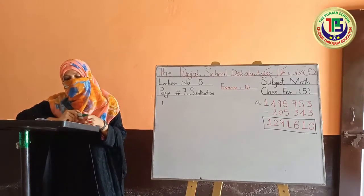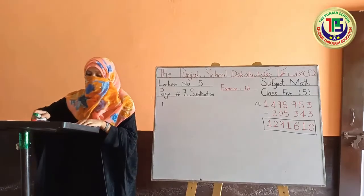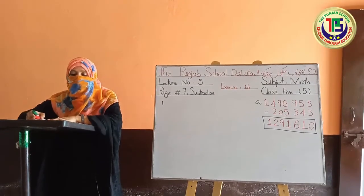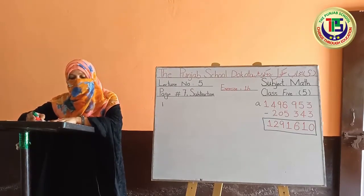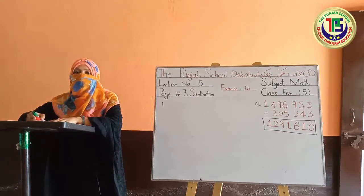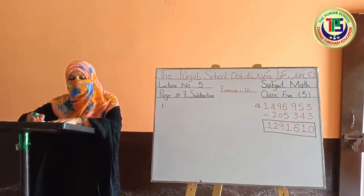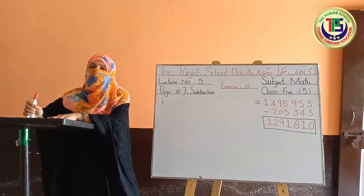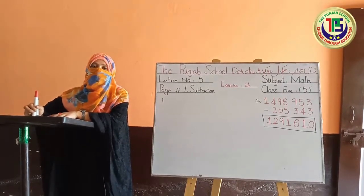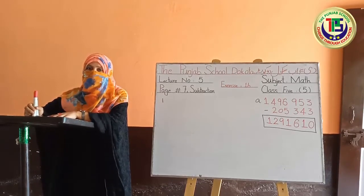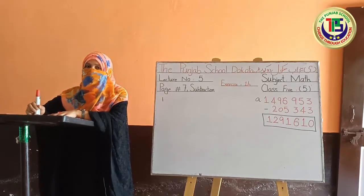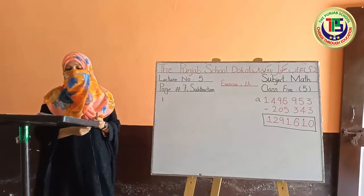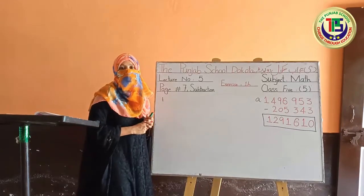There are two statements: A and B. Look at A first: 'Find the difference between the greatest 8-digit number and the greatest 5-digit number.' They have asked us to find the difference — that means subtract the greatest 5-digit number from the greatest 8-digit number and tell the answer. First we take the greatest 8-digit number, then the greatest 5-digit number. In the previous lecture I taught you how to write these numbers: smallest numbers start with 1 followed by zeros, and greatest numbers use the digit 9 — as many times as the number of digits required. So for the greatest 8-digit number, I will write 9 eight times.